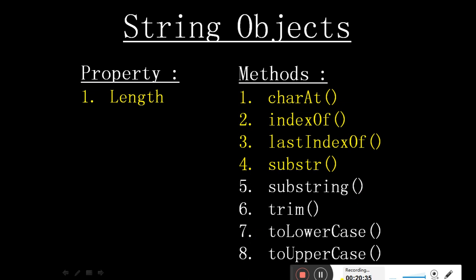Trim removes all spaces from both sides and extra spaces between characters. toLowerCase converts all the string into lowercase letters. toUpperCase converts all the string into uppercase letters. So here we end with the string object. All these are the properties and methods of the string object. You are supposed to practice the programs explained in detail. If you have any doubt, make a note and whenever college opens, come and clear your doubt there. Thank you so much.